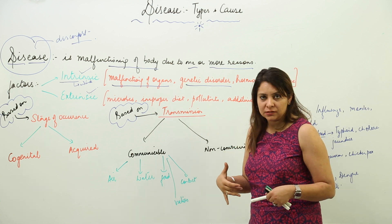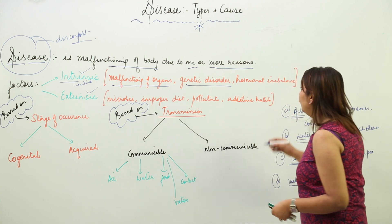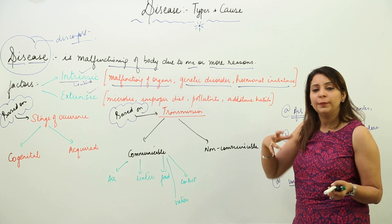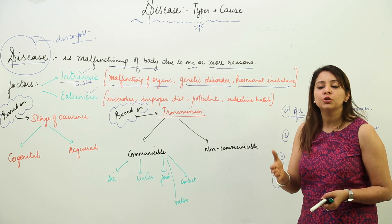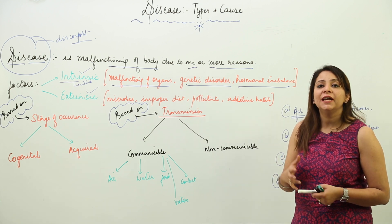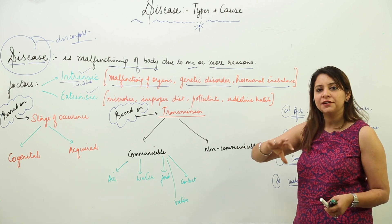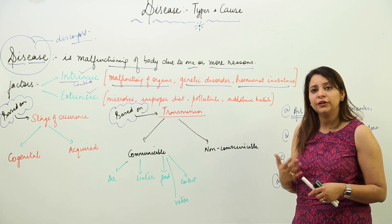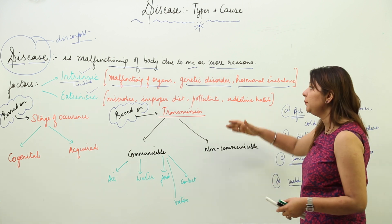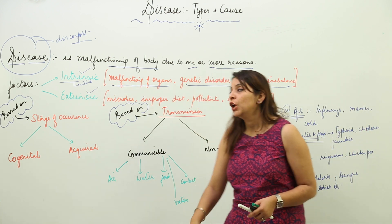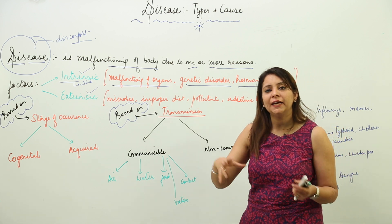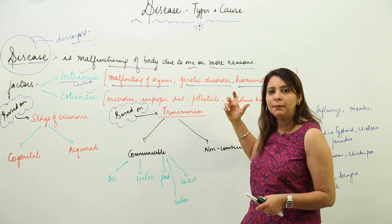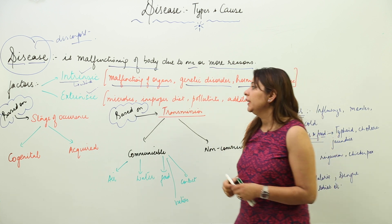Another intrinsic factor is genetic disorder — defective genes inherited from our parents. Additionally, there can be hormonal imbalance. Hormones are chemical messengers produced by glands, and if they are secreted in too large or too small an amount, that malfunctioning of glands leads to hormonal imbalance, which is also an intrinsic factor behind disease.